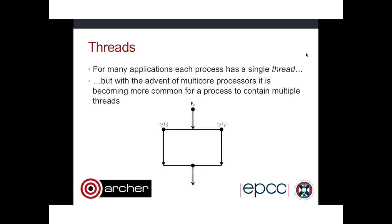Moving on from processes to threads: most applications we think of as having a single thread, where a single process runs everything sequentially. But with multi-core processors, it's becoming more common for a process to contain multiple threads. Each process can have multiple threads doing simultaneous tasks with access to the same shared memory, so you can act on memory in a parallel way. A common example is a web browser: rather than one thread handling everything, the browser spawns a separate thread to run an embedded video while another handles the web page content.